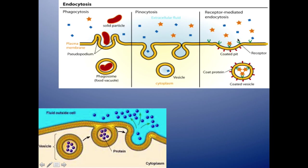In receptor-mediated endocytosis, there are receptors on a coated pit on the cell surface. Molecules floating around attach to these receptors, which triggers the invagination of the membrane and the formation of a coated vesicle. That's endocytosis — all of these processes bring material into the cell.